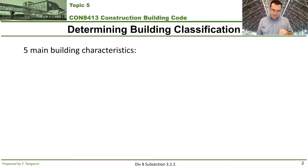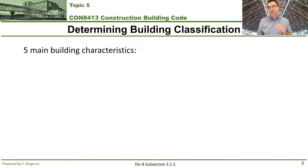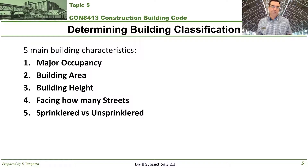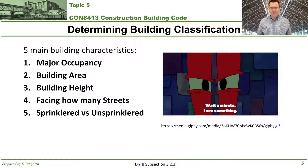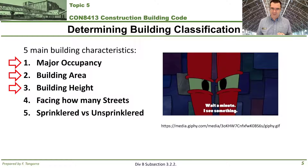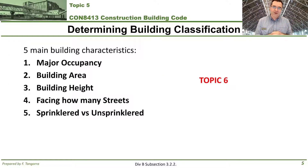For today's topic, we're going to learn how to use five main building characteristics to identify and assign a level of safety to any part 3 building. Here are the five characteristics in order: major occupancy, building area, building height, how many streets the building faces, and sprinklered versus unsprinklered. The top three may already be familiar to you, and all five will be covered in even more detail in topic 6.